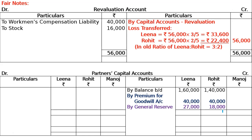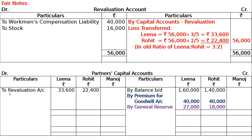For the general reserve of 50,000 shown on the liability side of the balance sheet: 10% = 5,000 will be transferred to provision for doubtful debts — no treatment in revaluation account, just adjust directly in the balance sheet. Remaining 45,000 is distributed to old partners in the old ratio of 3:2. Then, revaluation loss is debited to the capital accounts via the revaluation account.